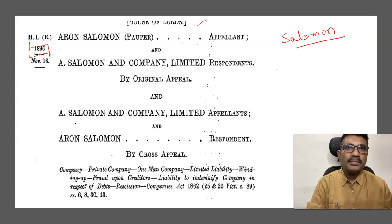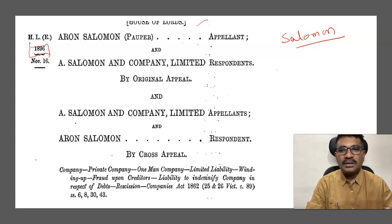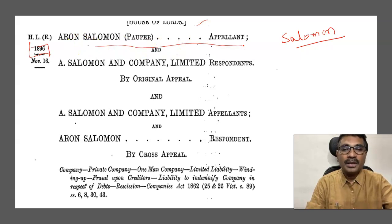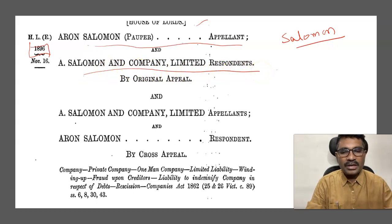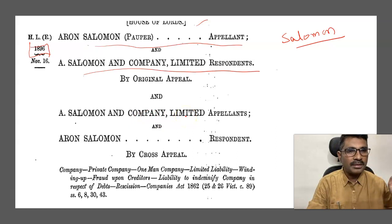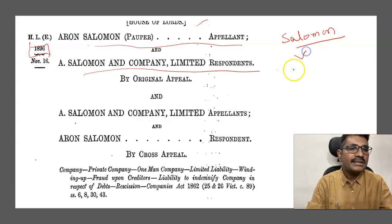There are two persons who approached the court before the House of Lords by original appeal. This is Arman Solomon, the pauper, versus A. Solomon and Company Limited, the respondent. And by cross appeal, Solomon Company Limited versus Arman Solomon. So the dispute is between Solomon versus Solomon Company Limited.